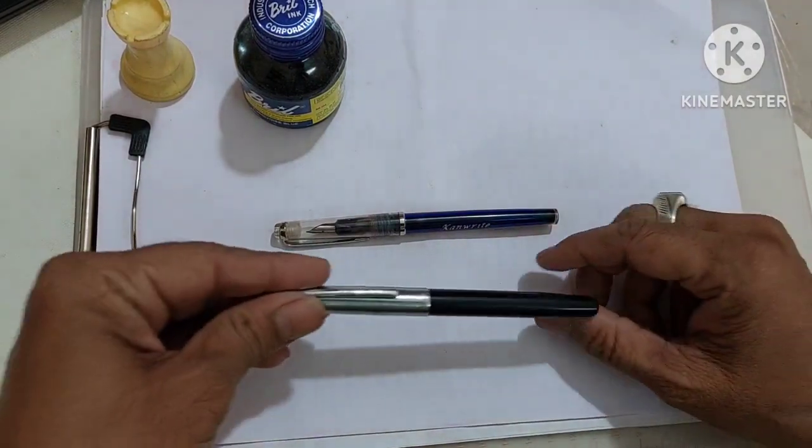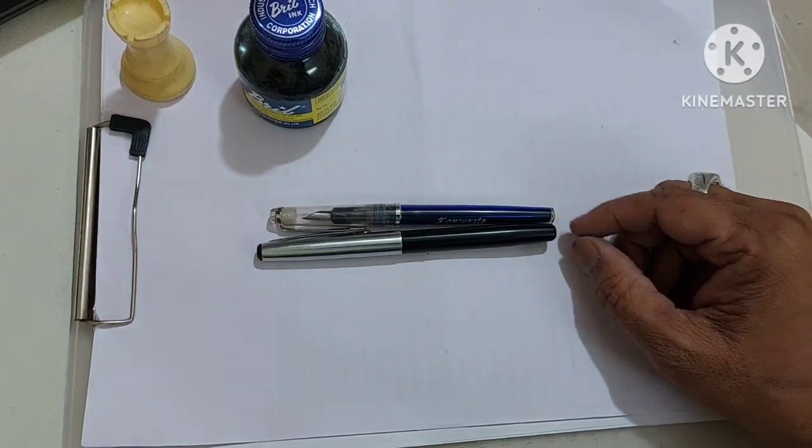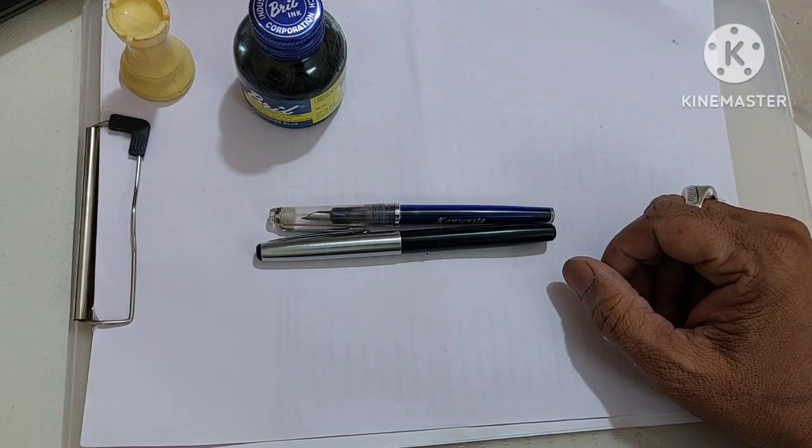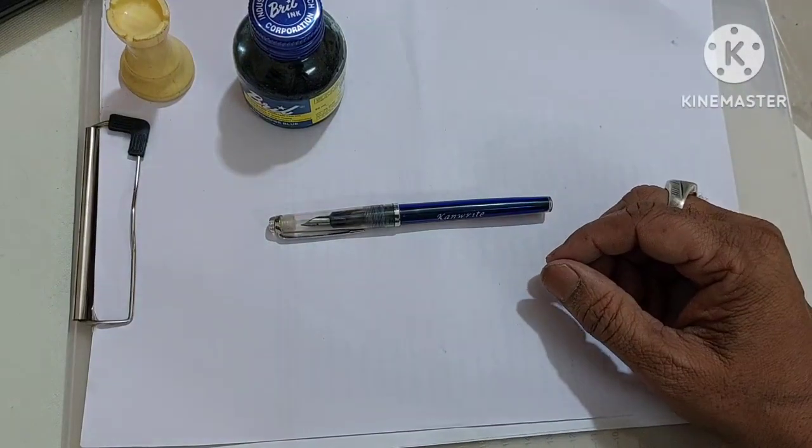So first let us start with the comparison of the size. As you can see it is slightly smaller than the Camlin 47 fountain pen and also it is slimmer than the fountain pen.